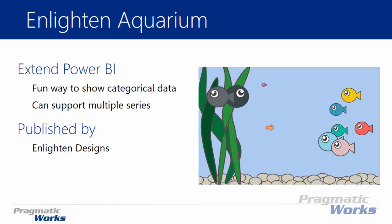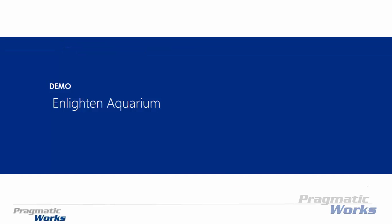It's really a fun one. It's not one that you're going to use for serious business use cases — you can see the image on the right is exactly what it looks like. It's not necessarily something you'd put on a very formal corporate dashboard; this is something you'll use for fun. It's a fun way of showing categorical data. It also supports multiple series, so if you have multiple types of metrics you want to visualize on a single chart, it can do that. It shows different shapes of fish on the aquarium. This was published by Enlighten Designs.